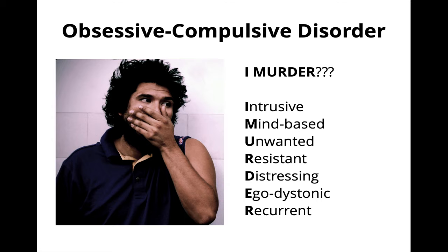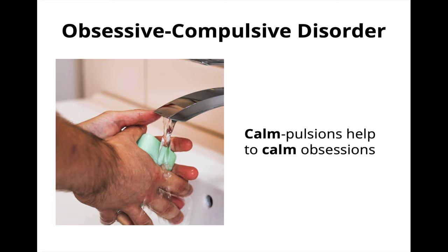When using the mnemonic 'I murder,' please keep in mind that people with OCD, even those with violent thoughts, are generally not violent and are less likely to act on these thoughts than your average person. The second part of the disorder is the compulsions. Some people with obsessive thoughts develop specific behaviors that help to calm their distress, such as someone with an obsession about germ contamination spending hours a day washing their hands, or someone with violent intrusive thoughts locking all potential weapons away. You can remember the function of compulsions by thinking of them as calm-pulsions — they are used to calm obsessions, at least temporarily.